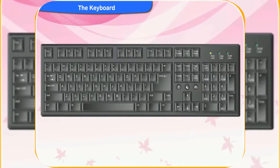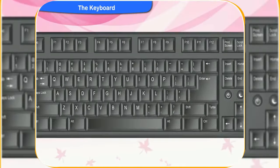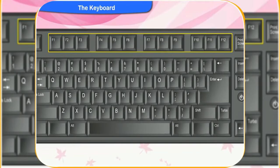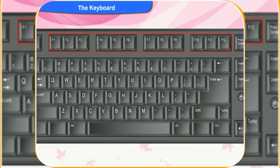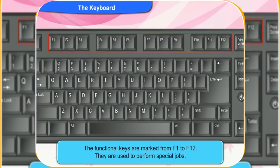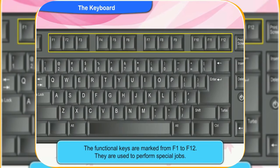Clicko, what are these keys on top of the keyboard? They are named from F1 to F12. They are the functional keys. They are used to perform special jobs.